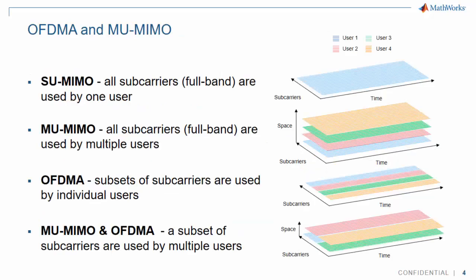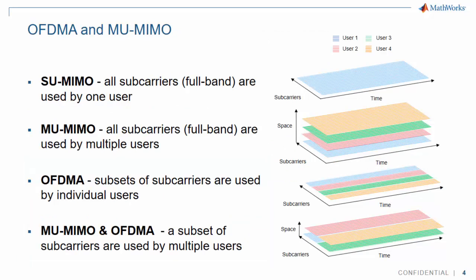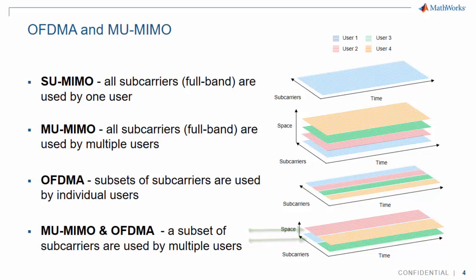Chief among those is the introduction of OFDMA and OFDMA with multi-user MIMO. OFDMA is very common in cellular standards such as LTE and 5G radio, and consists in sharing the spectrum between different users. Multi-user MIMO and OFDMA combined means that each slice of spectrum can be shared by several users.